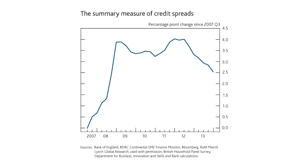This chart shows the summary measure of credit spreads — the difference between the rates facing typical households or companies and risk-free rates. Note that it's shown relative to 2007 Q3, which is the point in the financial crisis when spreads started widening markedly. As well as affecting economic decisions today, the evolution of credit spreads going forward is likely to impact on the amount of aggregate spending and investment in the economy.